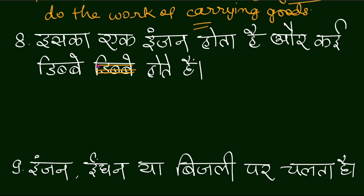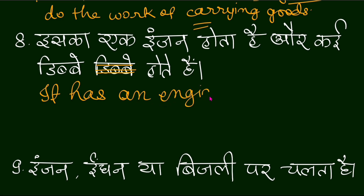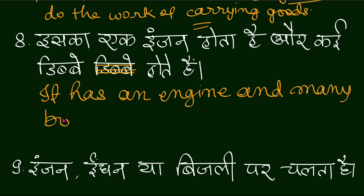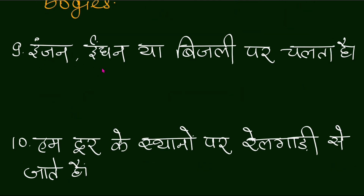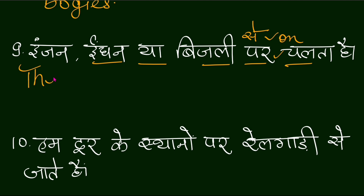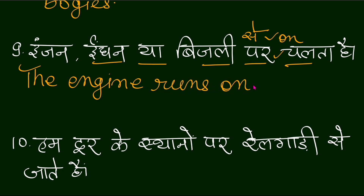Iska ek engine hota hai aur kai dibbe hote hain — 'it has an engine and many boggies.' Engine indhan ya bijli par chalta hai. For 'se' or 'par' (on/by), we always use 'on': 'The engine runs on fuel or electricity.'